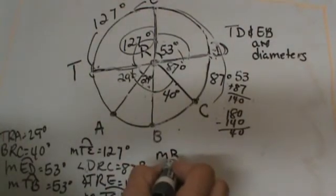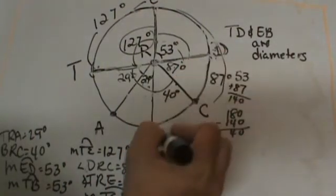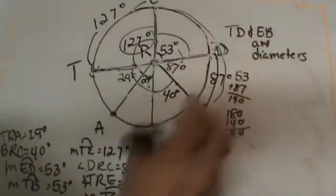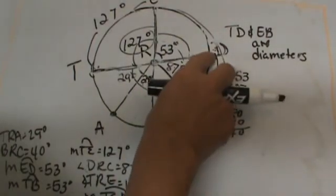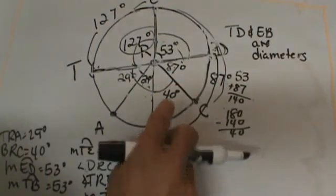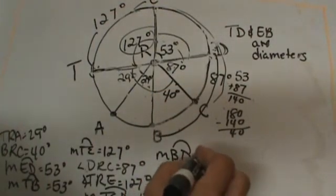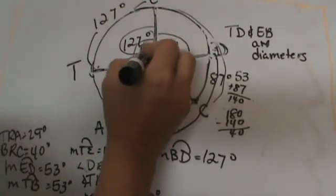How about the measure of BD? B to D. Well this arc, they are asking for an arc this time, we would just take the two angles and add them together. 87 and 40 is 127, because it is also a vertical angle with this one.